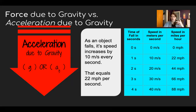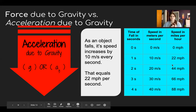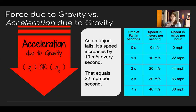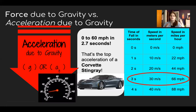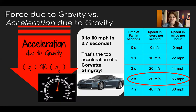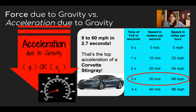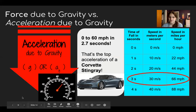Another way to think about acceleration: we often think of things moving forward rather than falling. A Corvette Stingray accelerates from zero to 60 mph in 2.7 seconds — that's the exact same acceleration as an object in free fall, assuming minimal air resistance (no parachute, not falling through water). That's a really fast amount of acceleration.